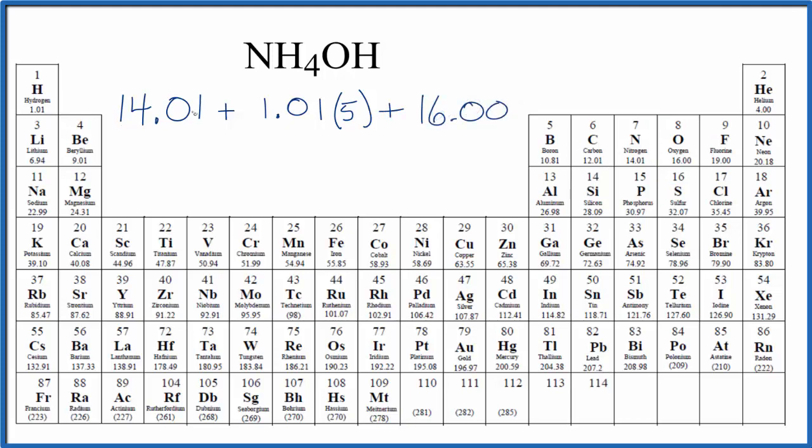So now we add 14.01 plus 5.05 plus 16, and that'll give us the molar mass for ammonium hydroxide. 35.06, and the units, grams per mole.